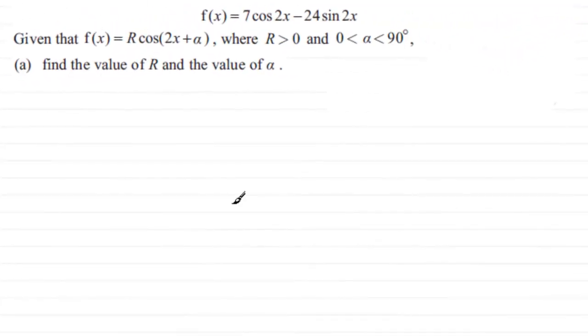Hi, now in this question we're told that f(x) equals 7cos2x minus 24sin2x and we're given that f(x) equals Rcos(2x plus alpha) where R is greater than 0